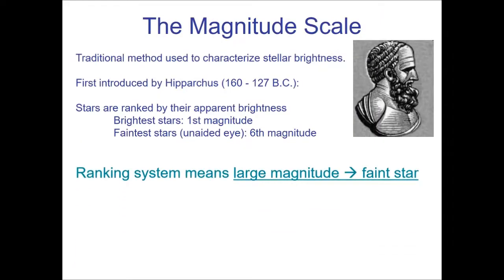Another important contribution was made by the Greek astronomer Hipparchus. He created a catalog of stars, which was common at the time — people tracked where stars were located, when certain stars rose at particular times of day and year. What made Hipparchus different is that in addition to cataloging stars, he also characterized how bright they were. The system he developed is one we still use today: the magnitude scale, a qualitative system to describe the brightness of stars.